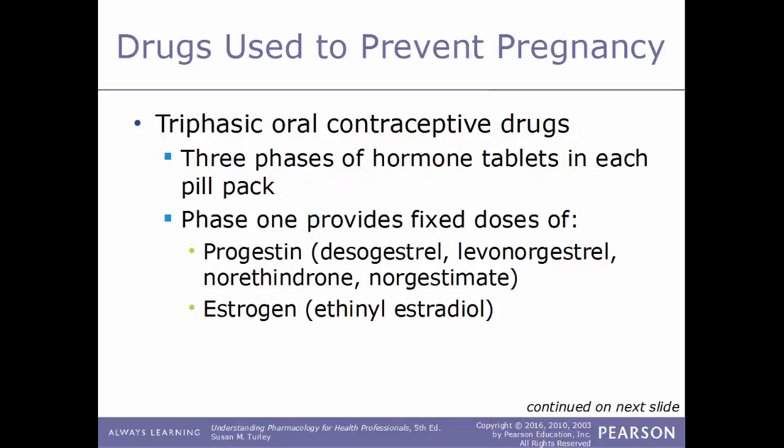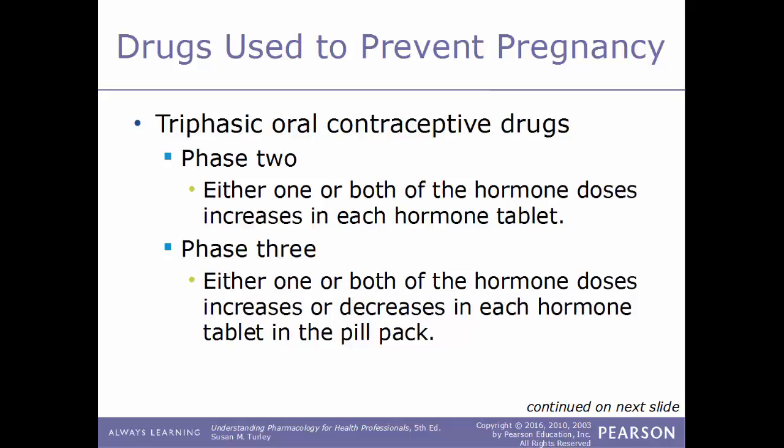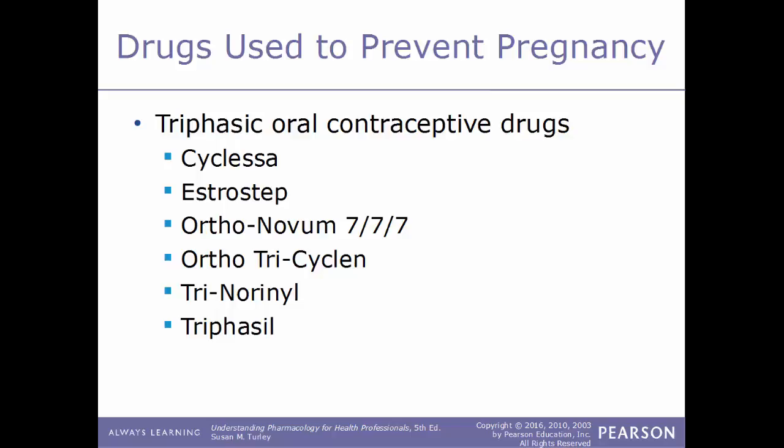Triphasic drugs have three phases of hormone tablets in each pill pack. Phase 1 has a fixed dose of both progestins and estrogen. In phase 2, either one or both hormone doses increase. In phase 3, either one or both hormone doses increase or decrease. Examples of triphasic contraceptives include Cyclessa, Estrostep, Ortho-Novum 7/7/7, Ortho Tri-Cyclen, Tri-Norinyl, and Triphasil.